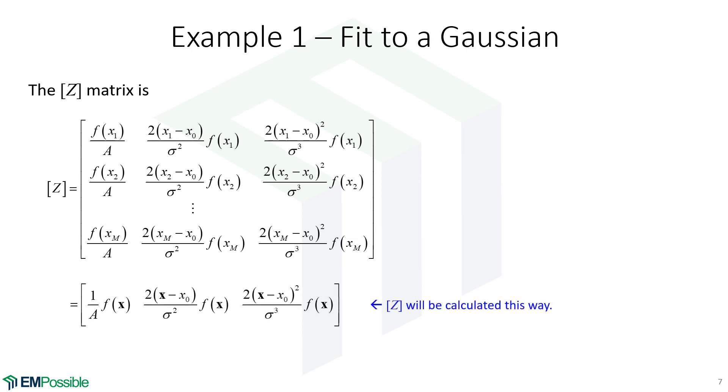Now, when we actually calculate this, we have three equations. Here's our partial derivative with respect to A, partial derivative with respect to X0, and partial derivative with respect to sigma. And what we'll do is we will put all our measured values of X into a column vector, or a one-dimensional array, and just calculate this entire column in the Z matrix at once. We'll calculate this other column of the Z matrix at the same time, and then this third column. And that makes it a little bit more compact and easy to do.